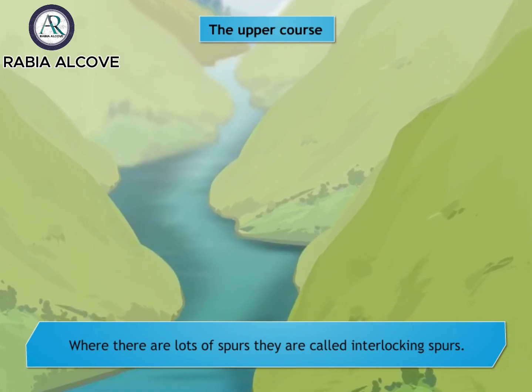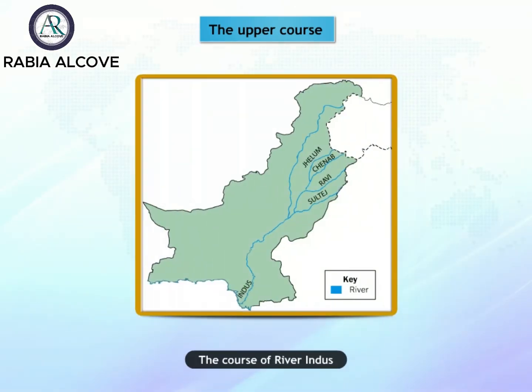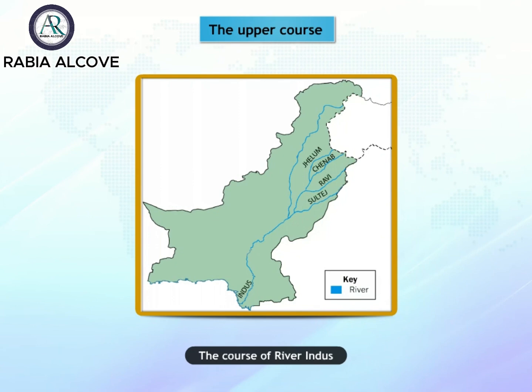As the Indus flows down from its source, four upstream rivers — Jellum, Ravi, Chanab, and Sutlej — join it at different places. These rivers come from streams, snow, and glaciers in the Himalaya, Karakoram, and Hindu Kush mountains.